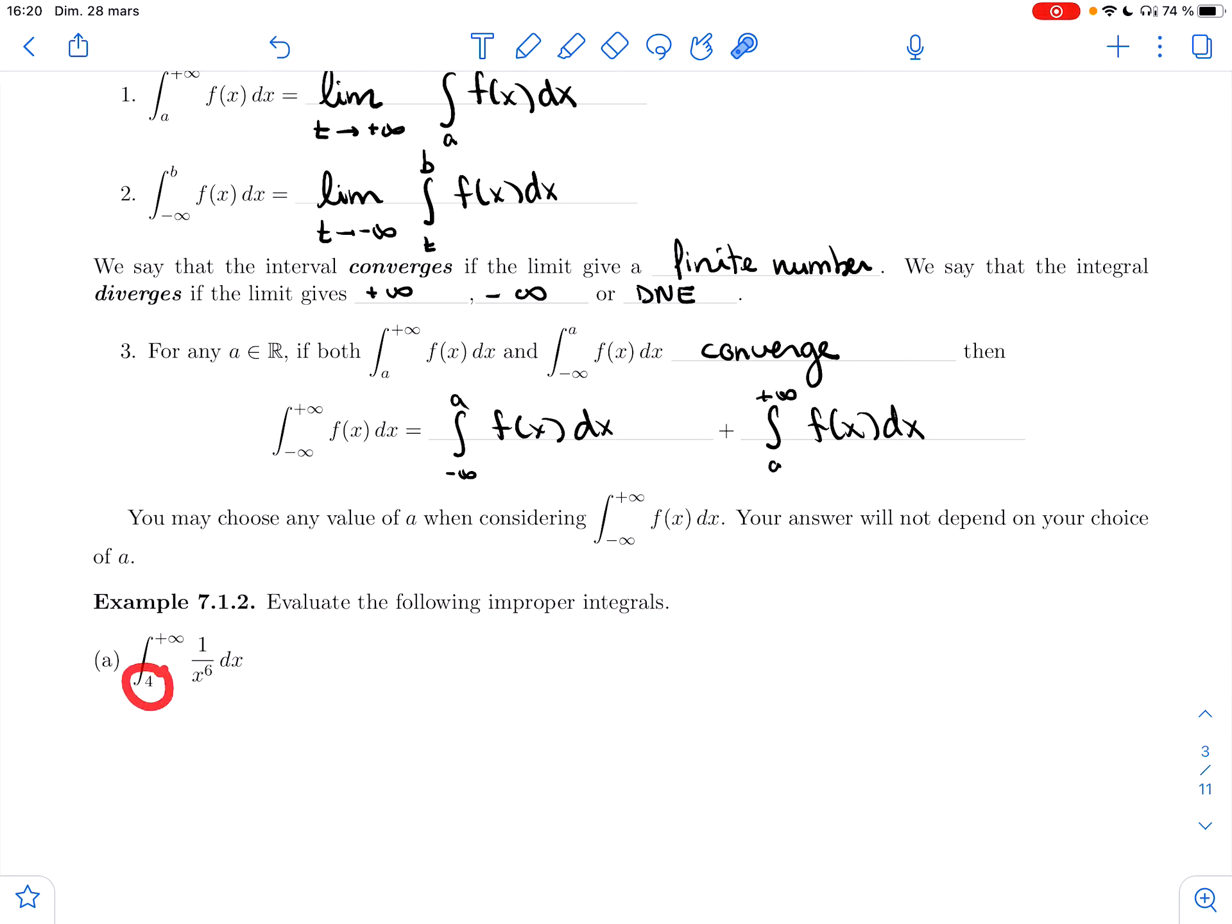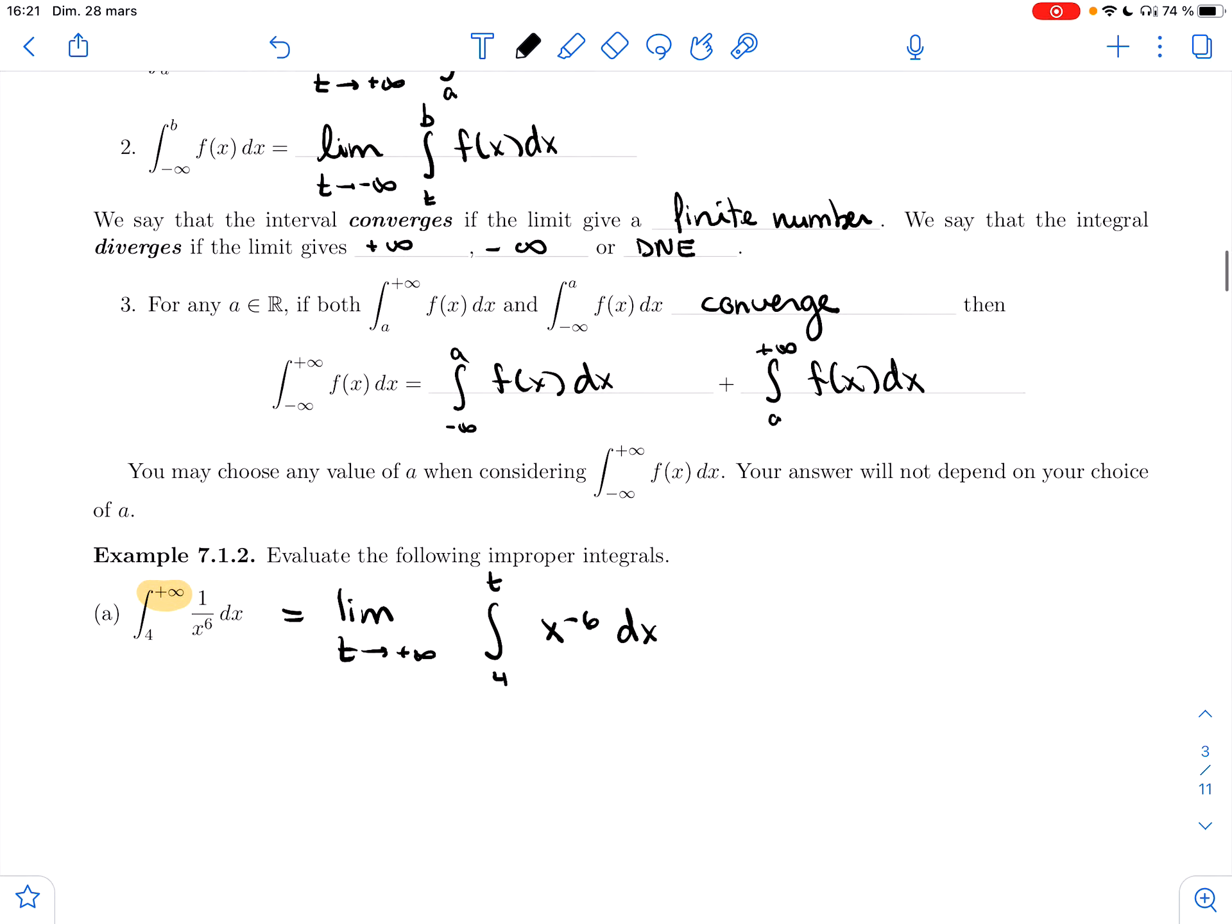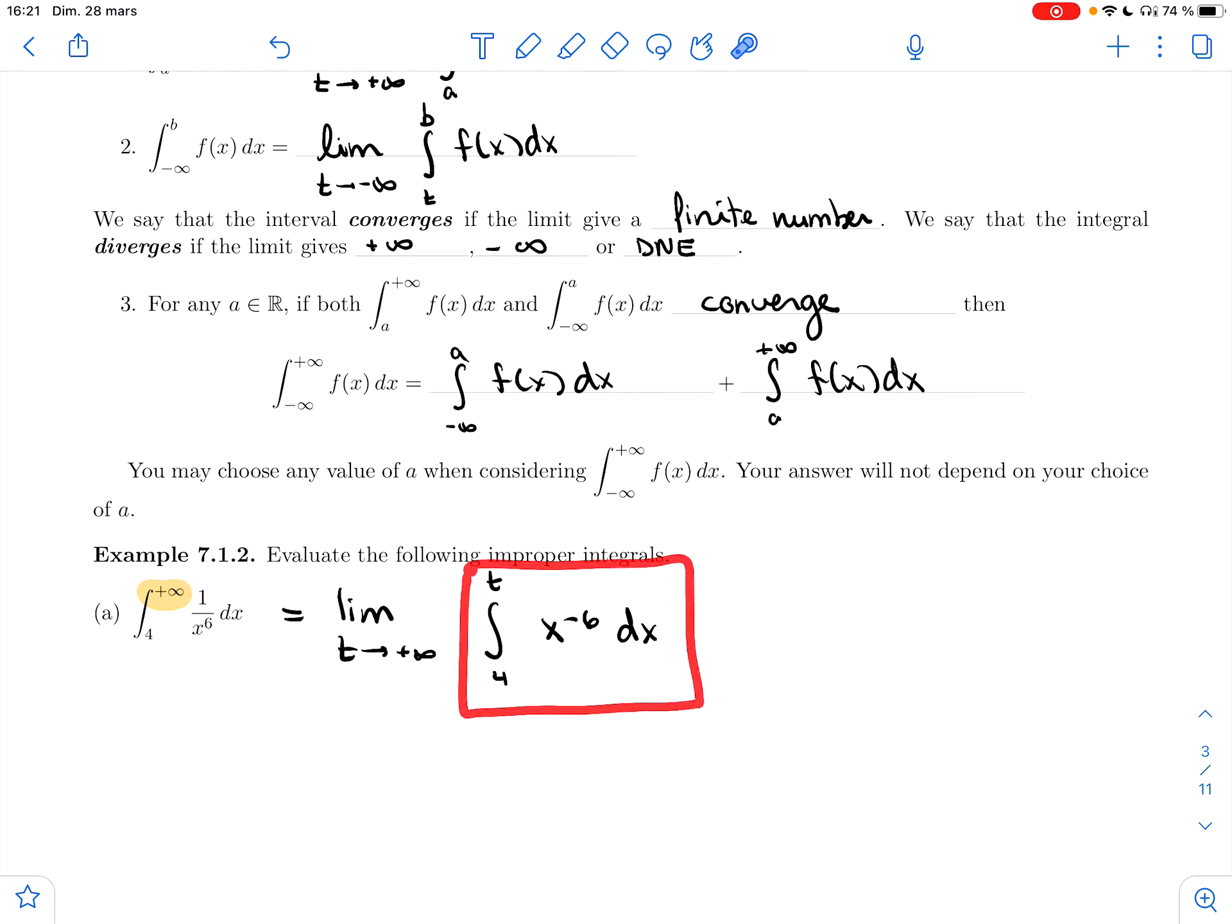Integral from 4 to positive infinity of 1/x^6. You can see right away this is the issue—one of my bounds is infinite. So to make sense of this, I'm going to take a limit and I replace the bound that's infinite by t.